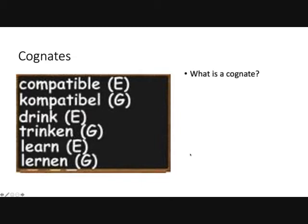What's a cognate? Cognates are words that sound the same in two languages and have very similar meaning. Here are a couple listed in English and in German — compatible, drink, learn. You could have guessed denkt means think. A lot of the words are similar, as I said.